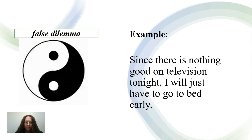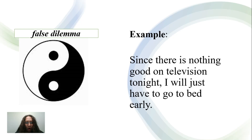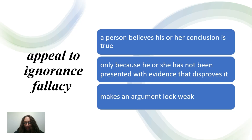Let's look at another one. Since there is nothing good on television tonight, I will just have to go to bed. Well, it's one thing if you want to go to bed, but it's something else that you're going to bed only because there is nothing on TV. Because if you want to do something else, you could read a book, spend some time with family, or visit a friend. Therefore, the arguer is giving only two options, and that is a false dilemma — also called black-and-white or either-or fallacy.